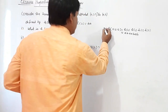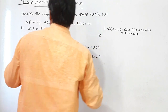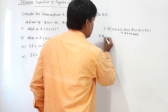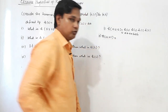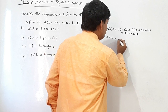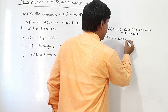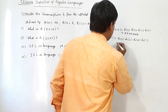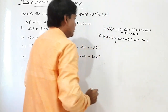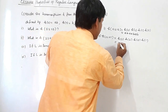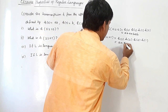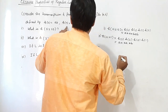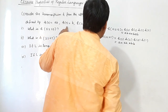For the second part, H(2201) = H(2) · H(2) · H(0) · H(1), which equals AA · AA · AB · B.